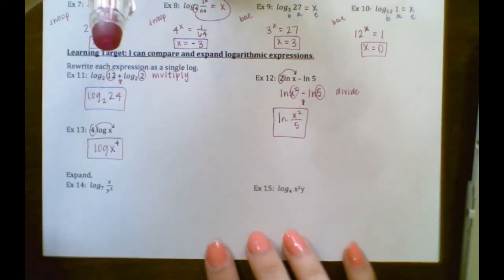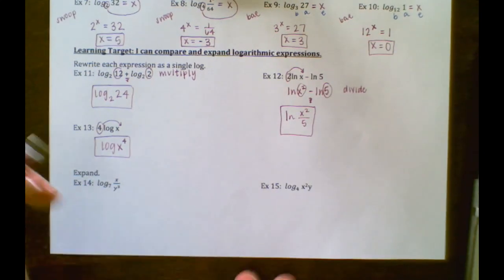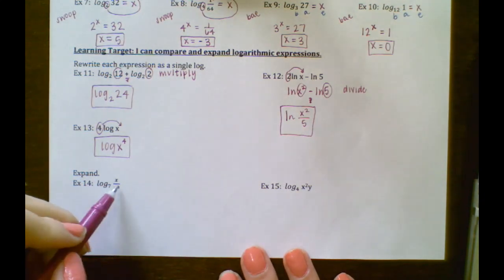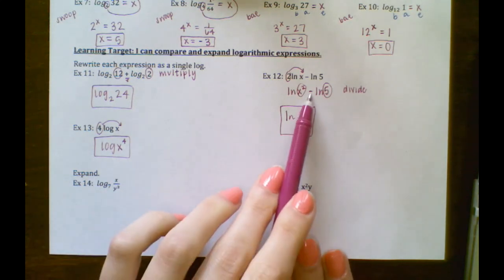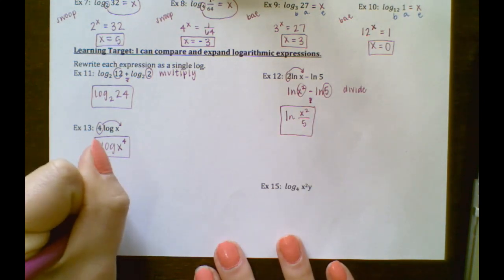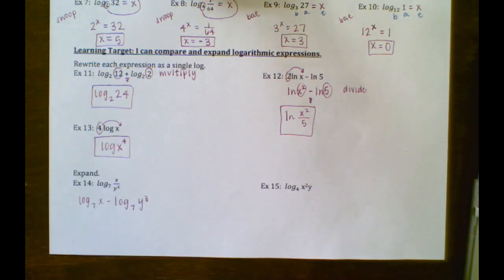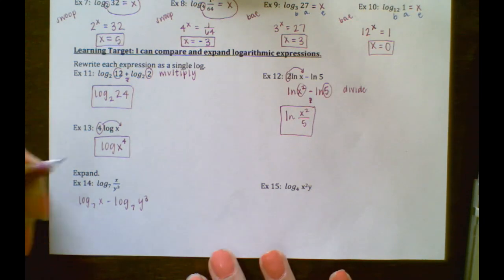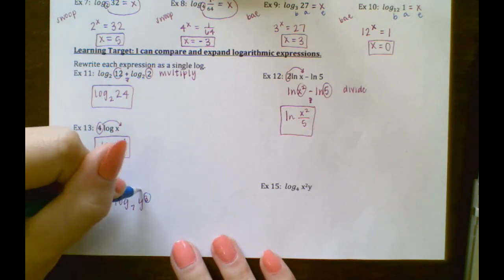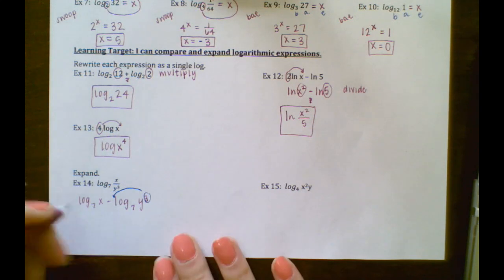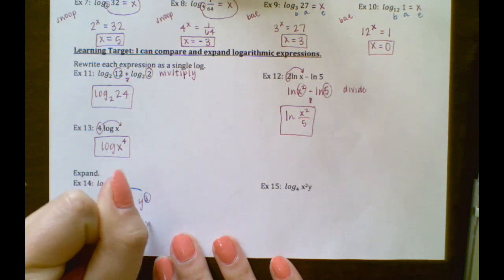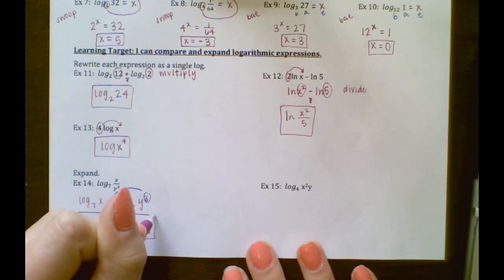Now let's talk about expanding — we're working backwards. We have log base 7 of x divided by y to the third. Because we're dividing, we need to make this a subtraction: log base 7 of x minus log base 7 of y to the third. Now notice there's a power — we need to get rid of that power by moving it to the front: log base 7 of x minus 3 times log base 7 of y.